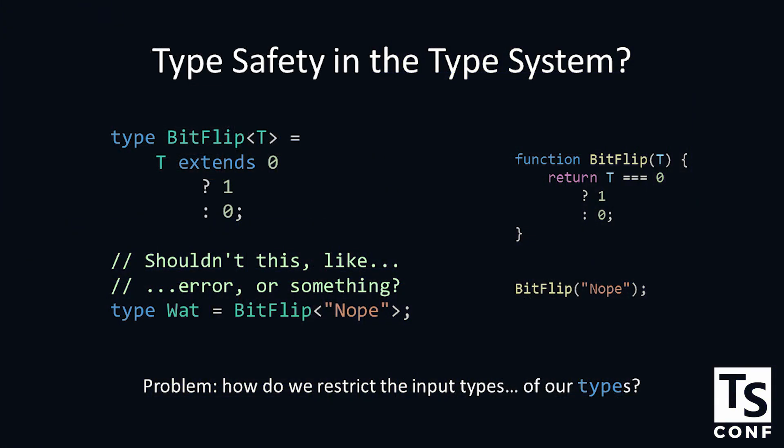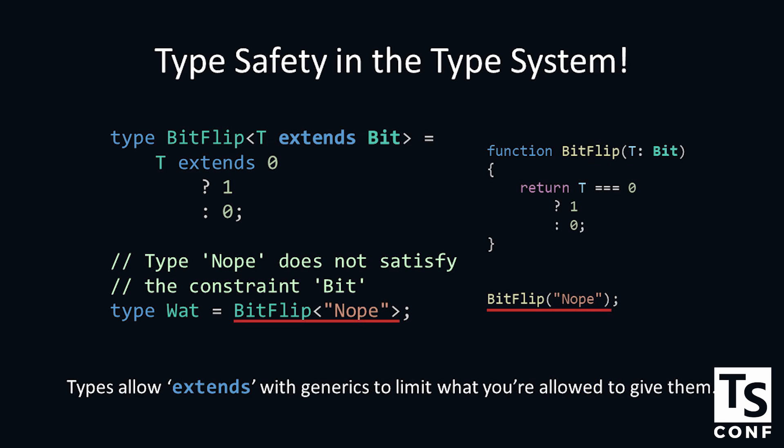Moving on. This is TypeScript, and I'm showing you vanilla JavaScript on the right, and you're all thinking, well Josh, this is a TypeScript conference. Surely we should have type safety here. How do we restrict the input types of our types? How do we say this T has to be a 0 or a 1, it has to be a bit? Because if someone gives us a string, the result would be 0. So in that case, we have this special extends operator in the generic type itself: T extends bit. Types allow extends with generics to limit what you're allowed to give them. It's kind of like declaring a type on a function parameter. In this case, we get errors with it.